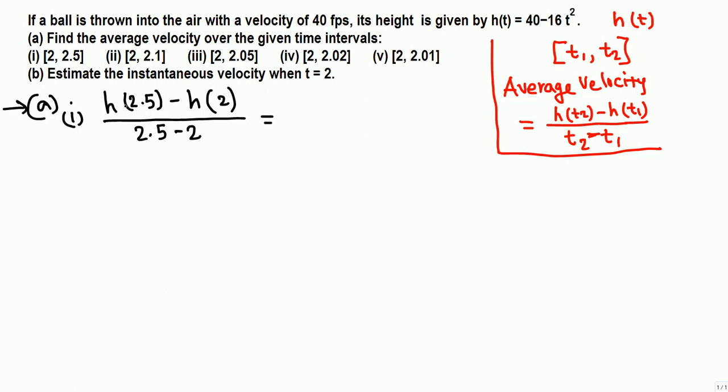Now evaluate this: h at 2.5, that means here is the function, plug in 2.5 here: 40 minus 16 times 2.5 quantity squared, minus evaluate h(2), which means replace T by 2 and subtract, and divide by 2.5 minus 2. Use your calculator, plug in everything, you will have negative 72.